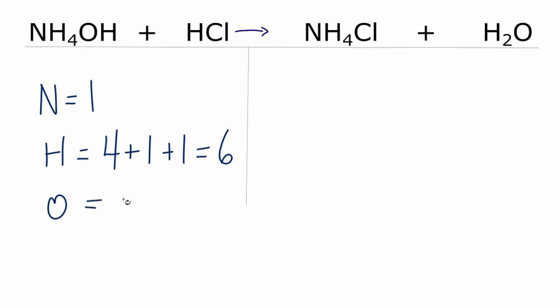Oxygen, we have just one, and then one chlorine atom. Over on the product side, we have nitrogen, one of those. Hydrogen, we have the four right here, plus this two. So we have six hydrogens on the product side as well.